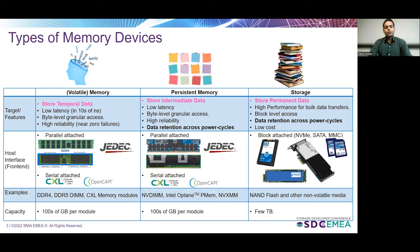Another type of memory device in the market is persistent memory devices. The major feature which differentiates them from standard volatile memory modules is the ability to preserve data across power cycles. They follow the same requirements of a standard memory module like low latency and byte-level or cache-level granular access. A few examples of persistent memory modules available today are NVDIMM-N DIMMs or Intel Optane persistent memory DIMMs. The capacity of persistent memory devices available today is limited by media density, PCB real estate constraints, and power and thermal constraints.